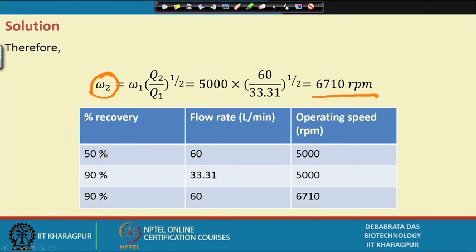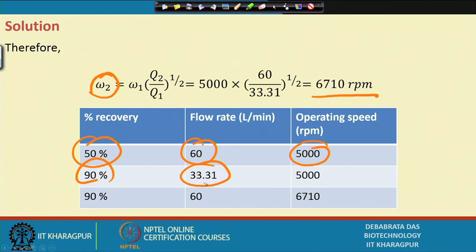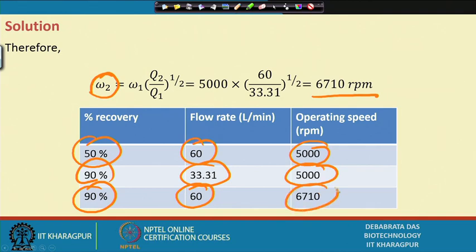Summarized in a table: at 50 percent solid recovery with a flow rate of 60 L/min, the operating speed is 5000 rpm. For 90 percent separation, the flow rate must be reduced to 33.31 L/min at the same speed, or alternatively, the flow rate is maintained at 60 L/min and the rotational speed of the centrifuge is increased to 6710 rpm.